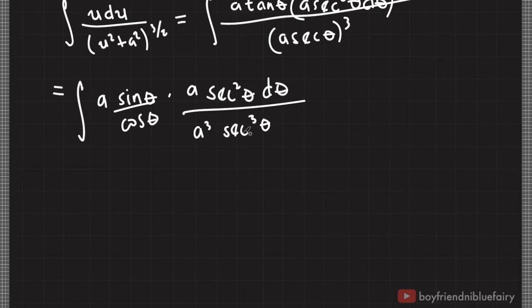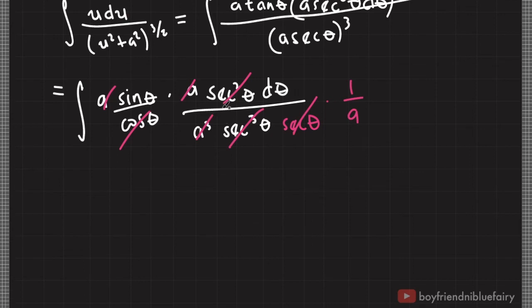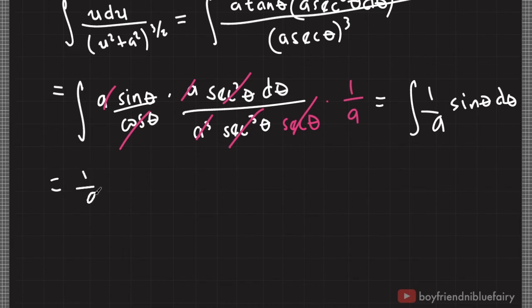Note that secant squared theta divided by secant cubed theta gives us secant theta in the denominator, which is 1 over secant theta, i.e., cosine theta. Essentially, we have a times a divided by a cubed, so we end up with 1 over a. Since 1 over cosine theta is secant theta, these two cancel out. And we end up with the integral of 1 over a times sin theta d theta, which is equal to 1 over a times negative cosine theta.